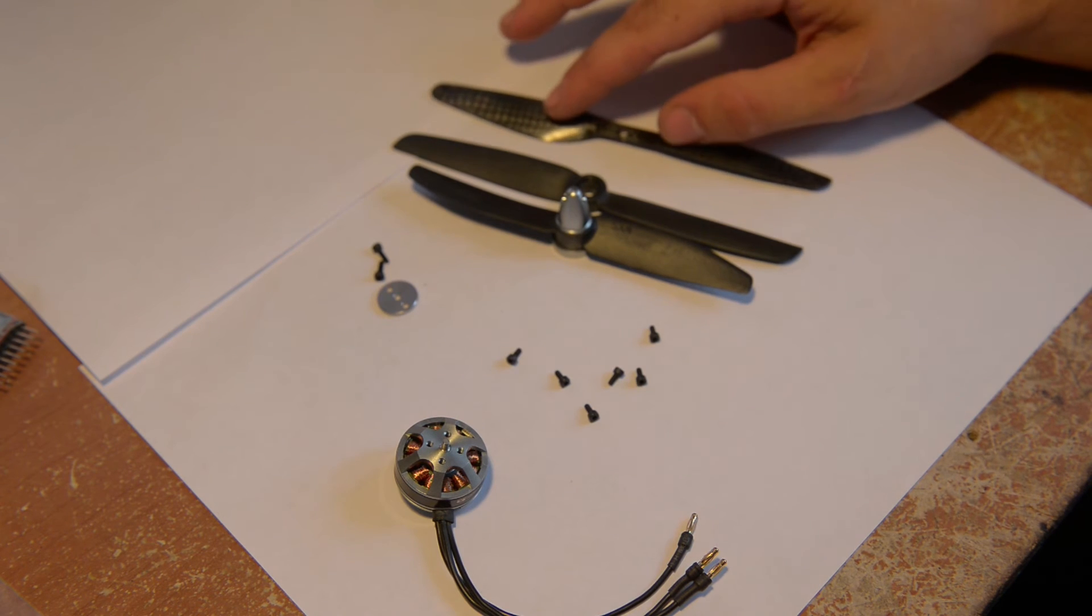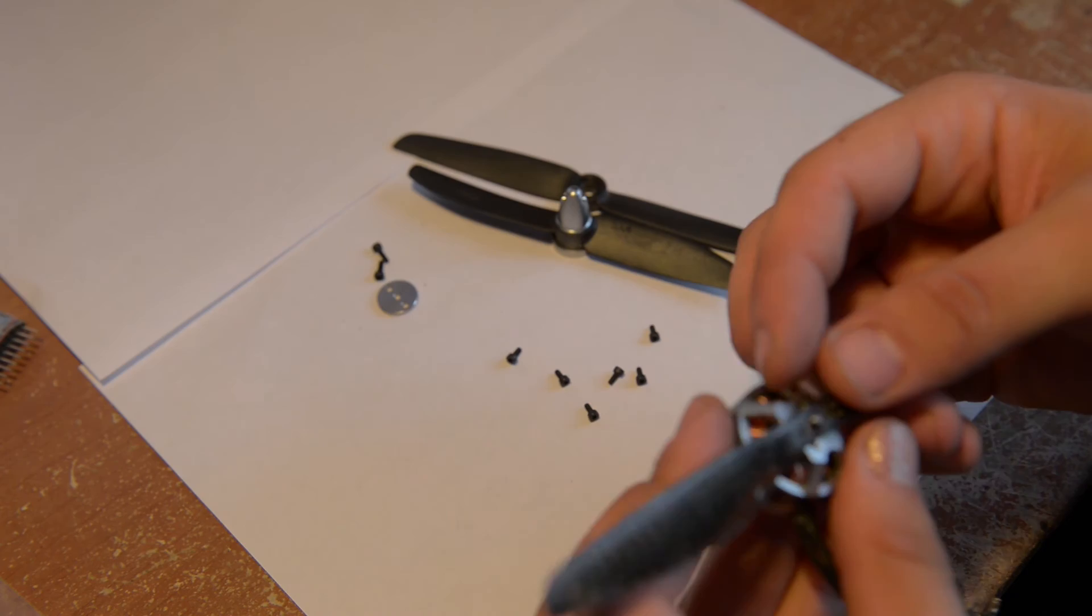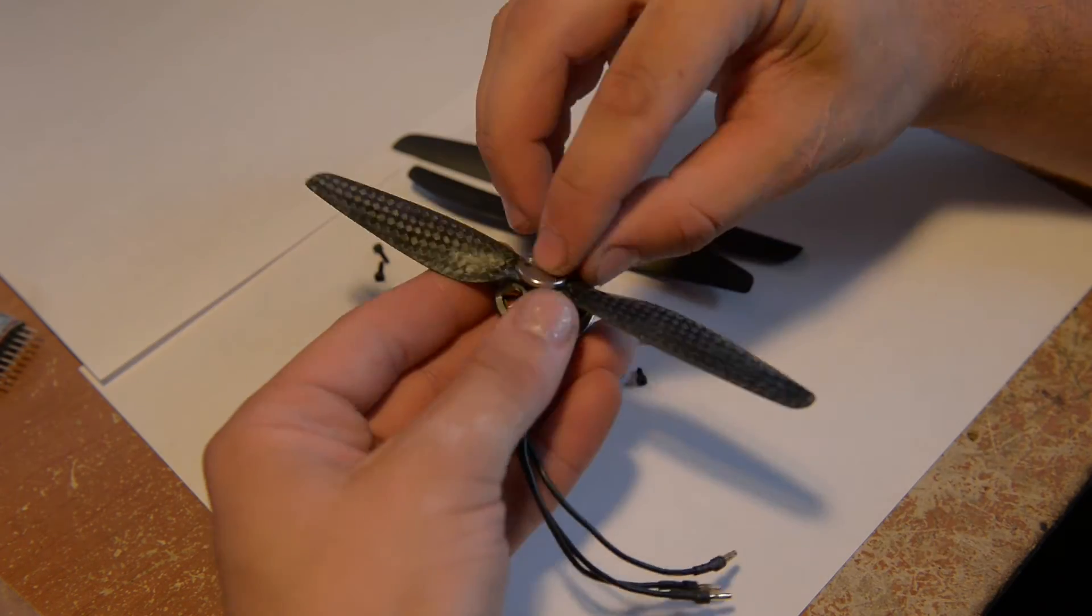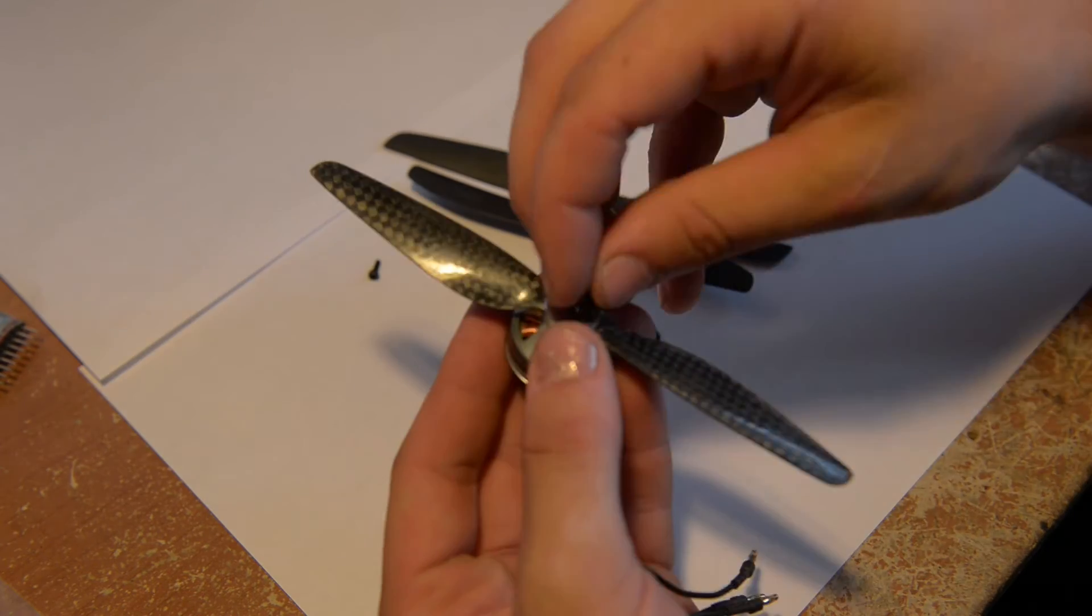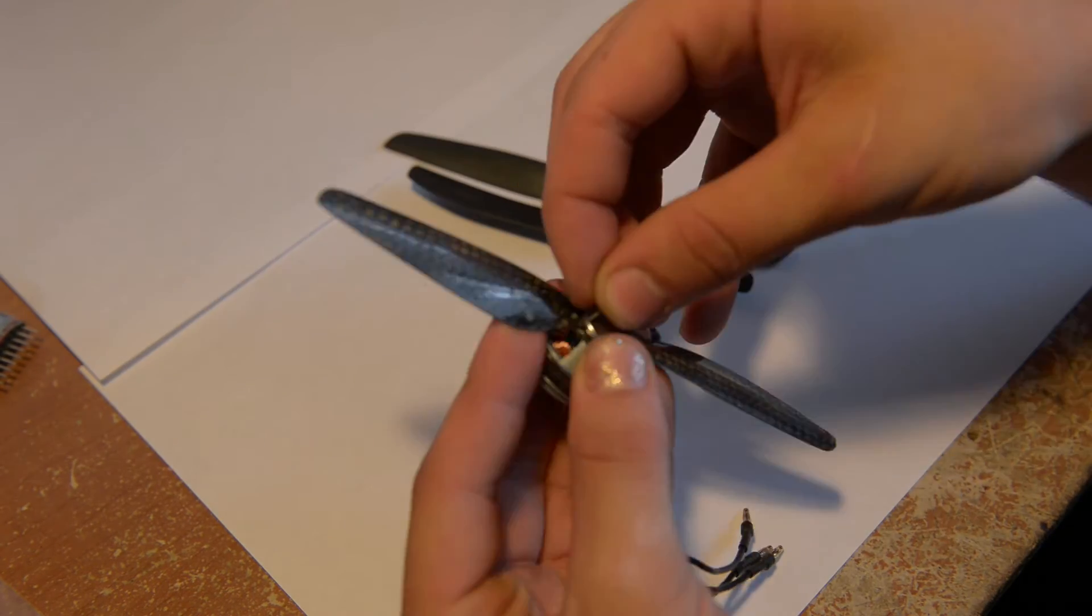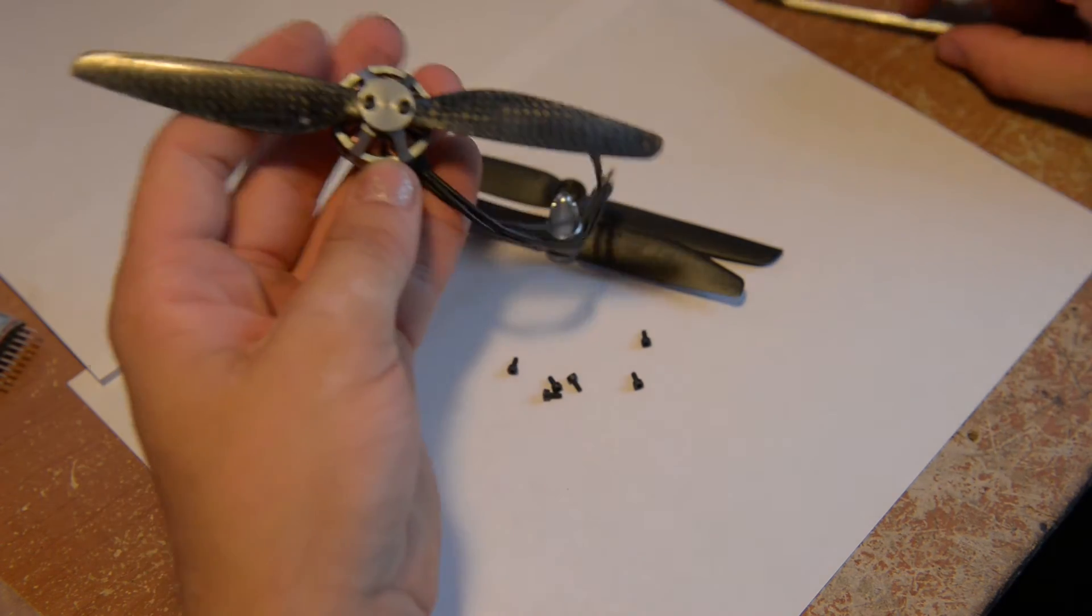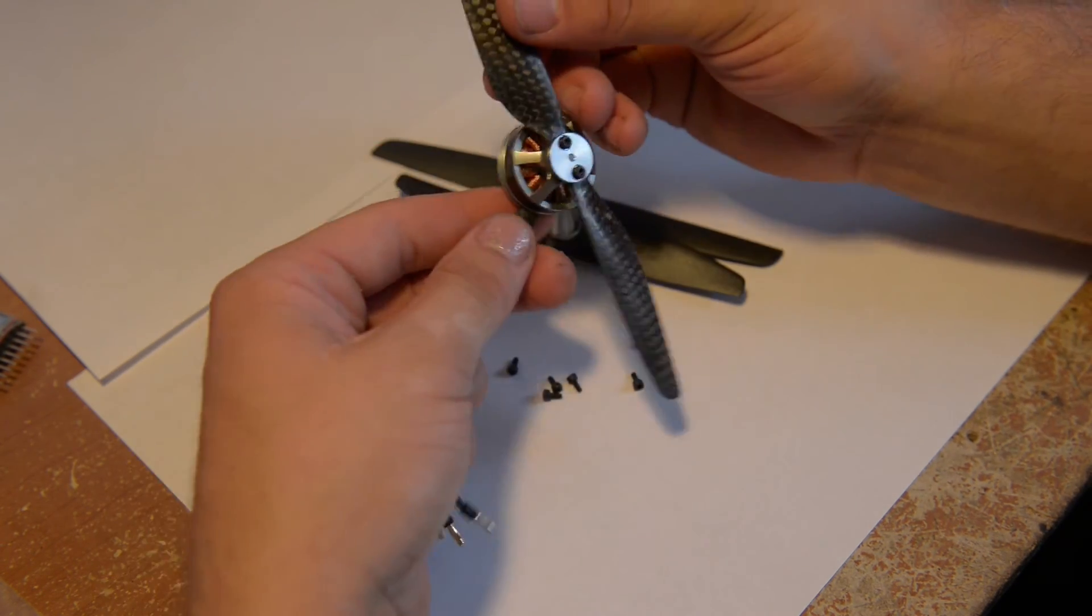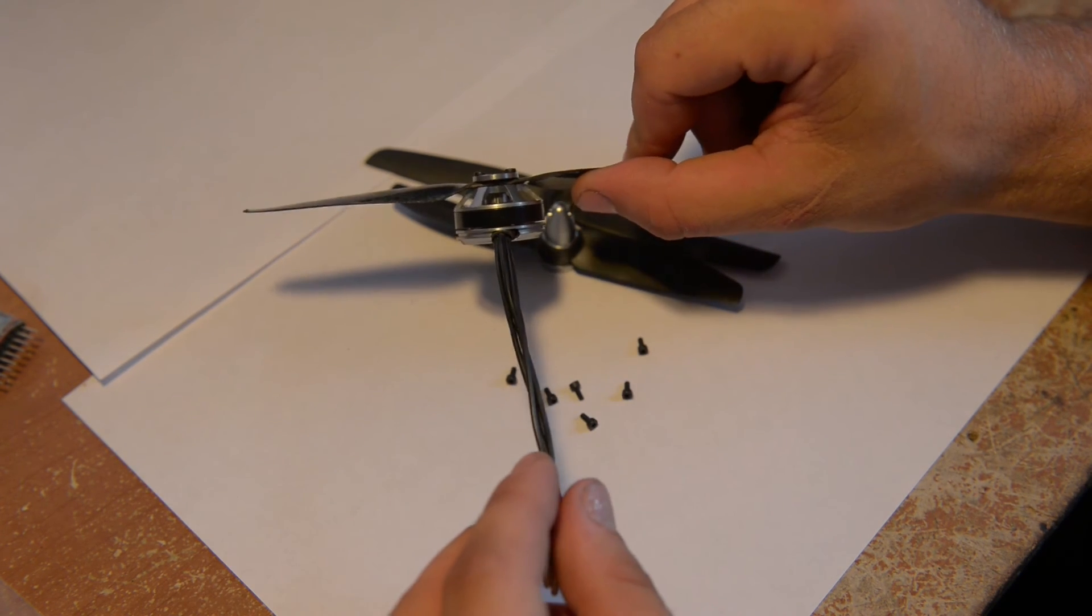This is also six inch carbon fiber, and the way this one will mount is just directly on top. There you go. So this is another style of prop you can mount on this, which is very cool.